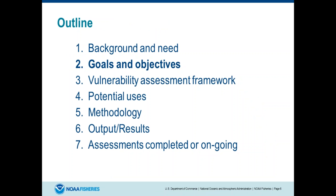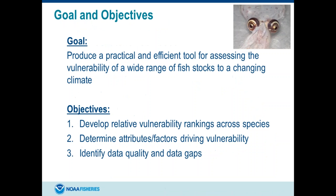So that's the background and need. A little bit on the goals and objectives of setting up the vulnerability assessment. The overall goal was to produce a methodology for looking across multiple species. When we did our first run in the Northeast, it was 82 species analyzed at once. So it's just a tool to look across multiple species — basically a triage, a first look to figure out which species would be more vulnerable or less vulnerable as a first step.